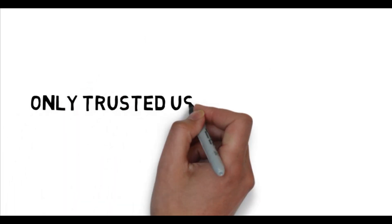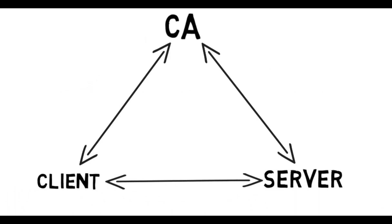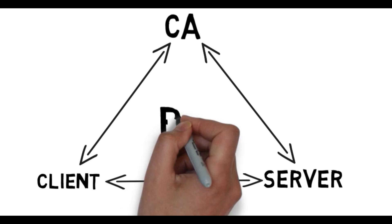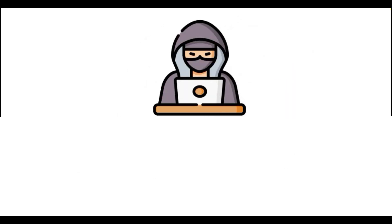This ensures that only trusted users and systems can authenticate to the KDC. As we said, PKI proves the identity of both the client and the server. The use of CA-issued certificates ensures that the KDC trusts the client and vice versa, reducing the chance of unknown devices or users accessing the network.